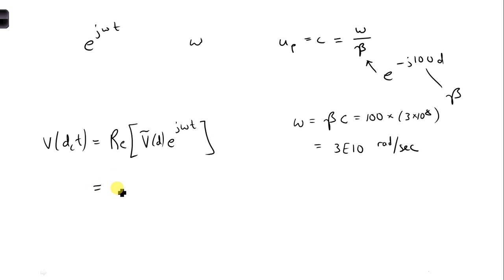And then if we use Euler's identity, and we take the real part, we're going to get, well, let me first write our expression. So we have 10, e to the j 0.5 pi, e to the 0.1d, e to the minus j 100d. And here is our e to the j omega t term, e to the j 3 times 10 to the 10th t.